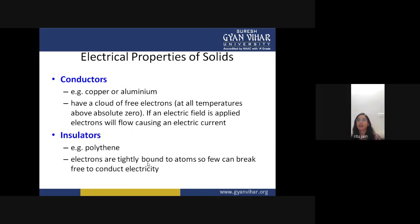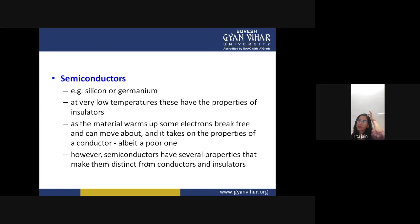Insulators such as polythene or plastic have electrons that are tightly bound to atoms, so very few can break free to conduct electricity — there are almost zero free electrons. Semiconductors such as silicon or germanium at very low temperatures have the properties of insulators, but as the material warms up, some electrons break free and the material takes on the properties of a conductor.